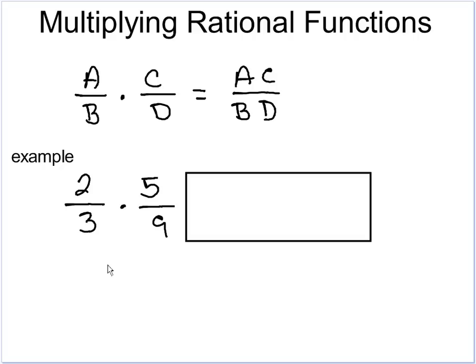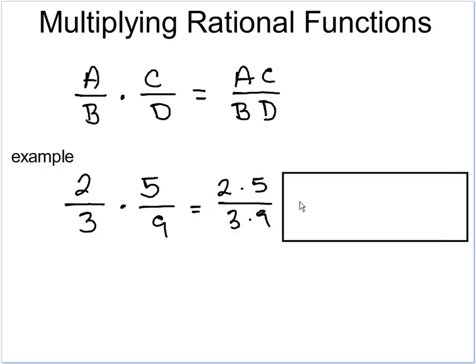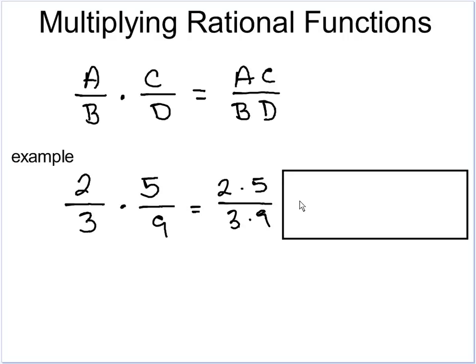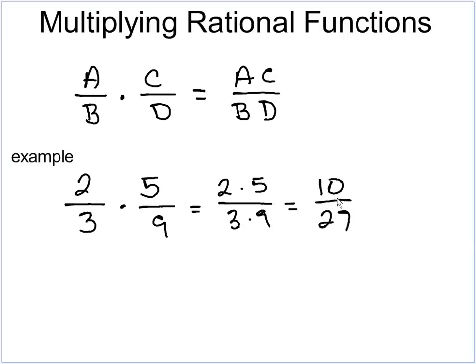Let's look at a simple fraction example. We have 2 over 3 times 5 over 9. We're just going to multiply the tops, so we have 2 times 5 over 3 times 9, and then multiply those. So 2 times 5 is 10, over 3 times 9 which is 27, and your answer is 10 over 27. This one is nice — we didn't have to reduce it at the end.